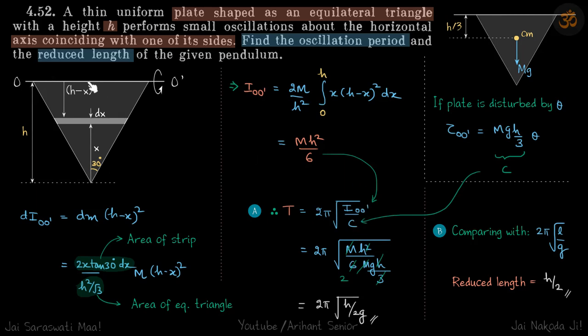And now let's calculate the moment of inertia about O'. So let's take a small strip at a distance x from the edge. So whenever we take a triangle and if you have to find this length of a strip, it's always better to take the x from the vertex instead of from here. So then this length is a bit simpler to calculate.